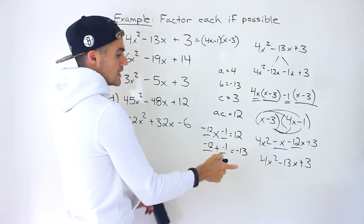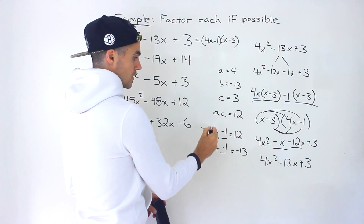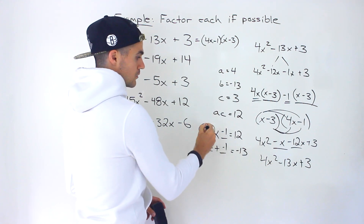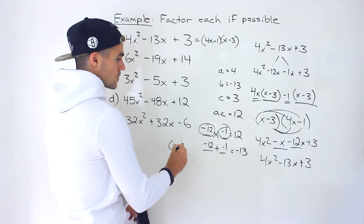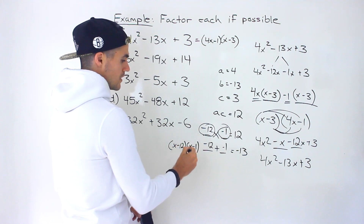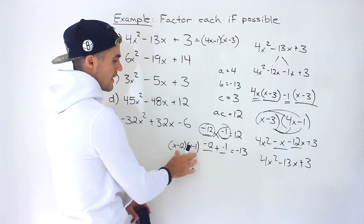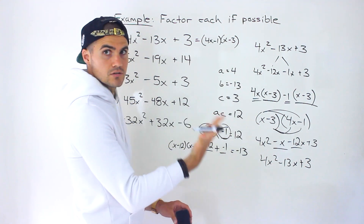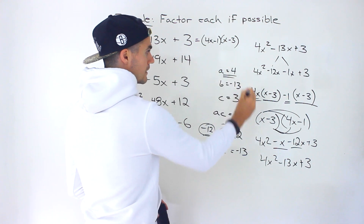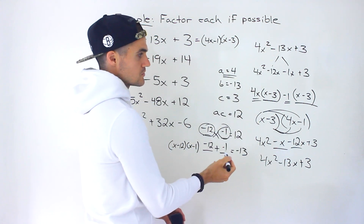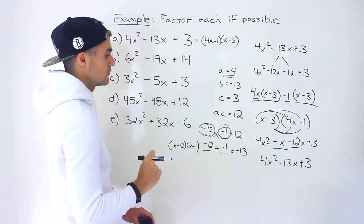Also notice: when the A value is 1 we could use the shortcut and read the factors directly — x minus 12, x minus 1. But that doesn't work here since the factors are totally different from those numbers. When A is not 1, you have to go through the full decomposition process.